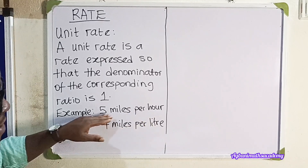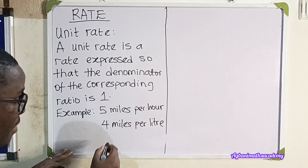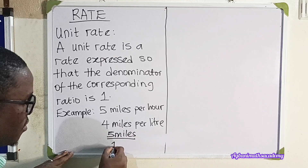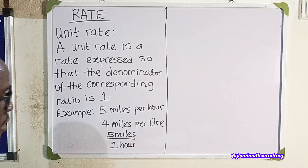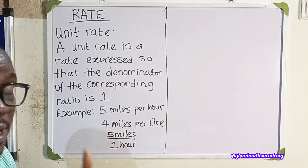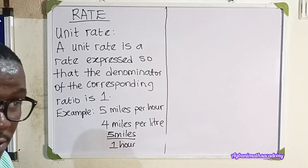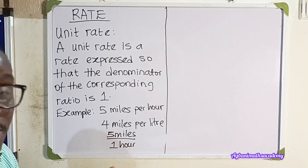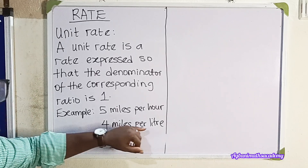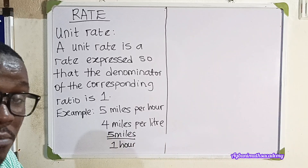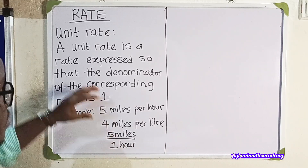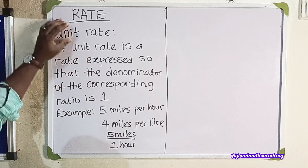So if you have five miles per hour, we can simply write it as five miles over one hour. Unit rate means that the denominator is one. So if I say five miles per hour, it means the vehicle covers five miles in one hour. Similarly, four miles per liter means four miles can be covered using one liter. This expression is called unit rate.